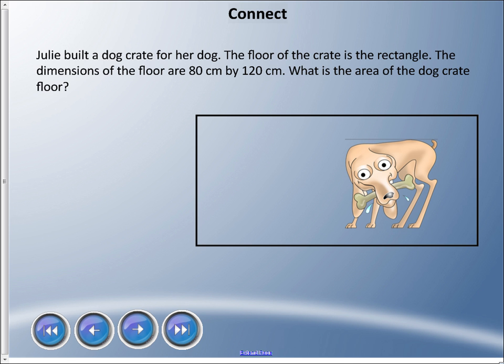So here's a problem. Julie built a dog crate for her dog. The floor of the crate is a rectangle. The dimensions of the floor are 80 centimeters by 120 centimeters. What is the area of the dog crate floor? So remember, we always write our formula first. I've had some people ask why we write this - so we don't make mistakes. And so area...